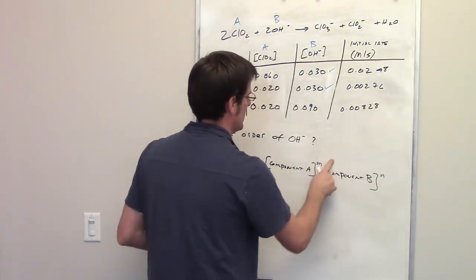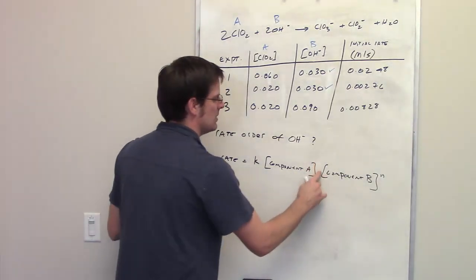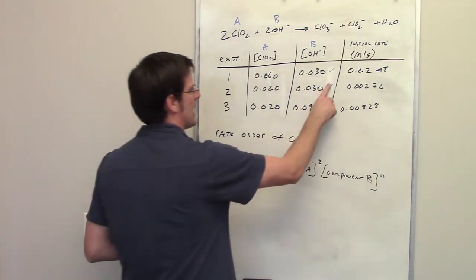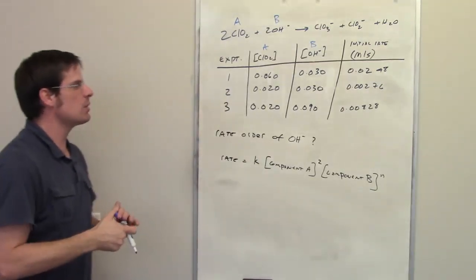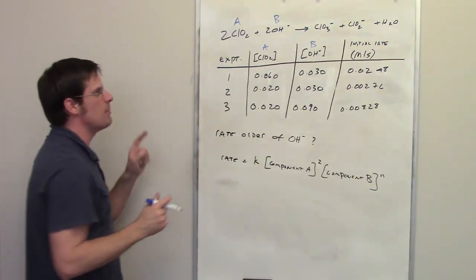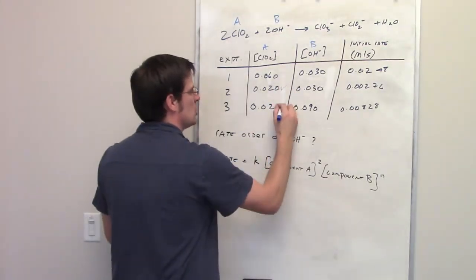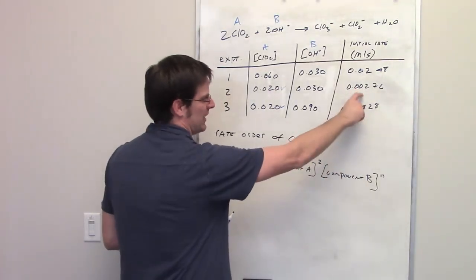From our previous work, we determined that M, the rate order with respect to component A, was 2. What is it for component B? How do I determine that? Once again, just as I did with the previous question, I'm going to focus in on the experiments in which component A's concentration was kept the same. That's experiments 2 and 3. Because I want to see, how does changing B affect the rate?